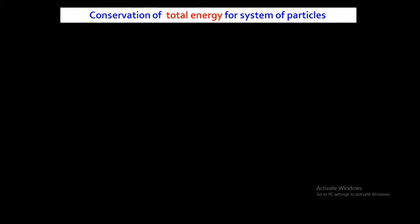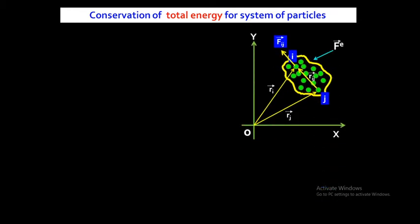A system of particles means the system consists of two or more particles. If we study the motion of that group of particles, it is called mechanics of system of particles. We will see how total energy is conserved for the system of particles. This diagram I have already explained in the last lecture when I explained the law of conservation of angular momentum for the system of particles — once more I am explaining this diagram. The yellow portion inside contains the particles; this is the system of particles.